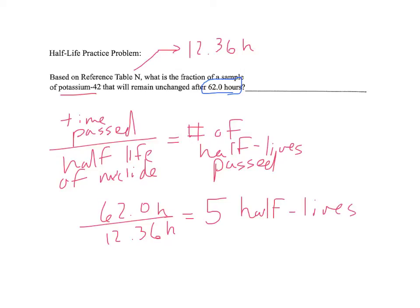Now, you're going to use the arrow method. So, you start with a whole sample. We'll call this 1. And for your first half-life, we'll label that arrow number 1. We're going to cut that in half, so we're left with half of our sample.